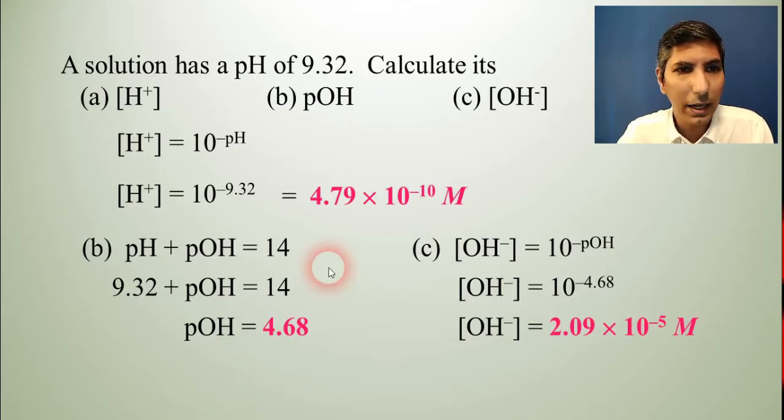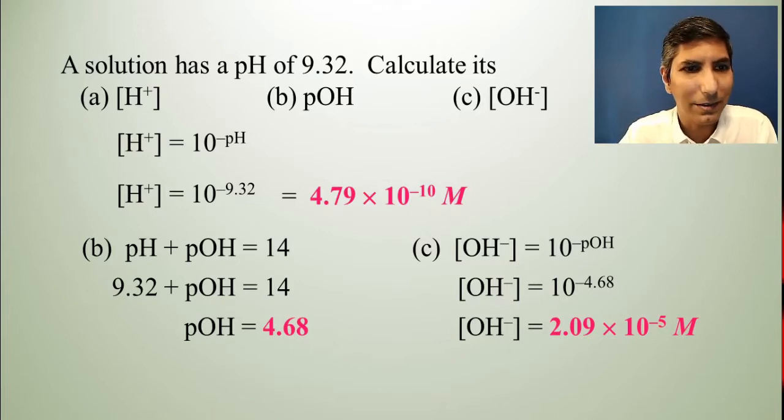Now, alternatively, you could have taken the value for Kw, 1.00 times 10 to the minus 14th, and divided it by your H plus concentration that you got in part A, and you would get the exact same answer. So, you have a couple ways to solve this last part.